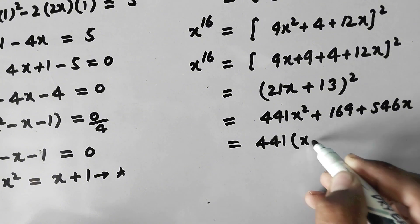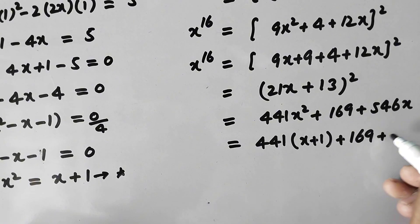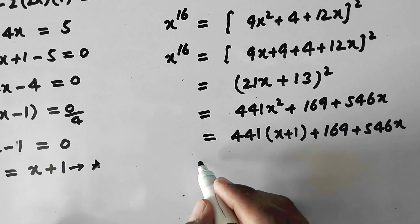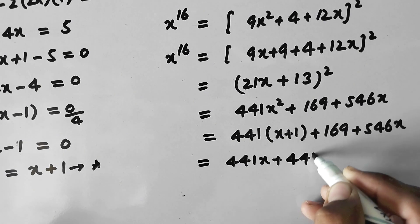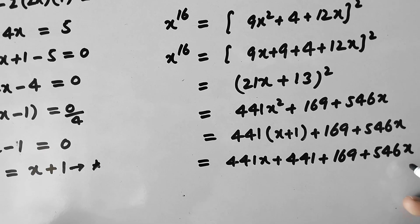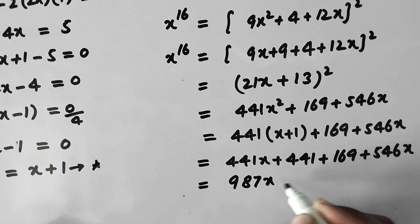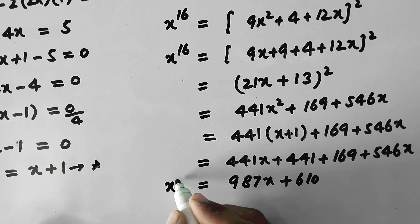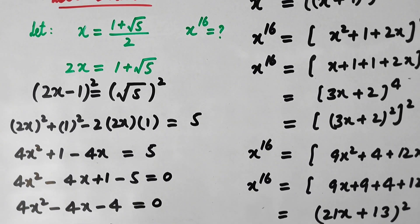Now squaring (21x plus 13): we get 441x squared plus 169 plus 546x. Substituting x squared equals x plus 1 again: 441(x plus 1) plus 169 plus 546x, which gives 441x plus 441 plus 169 plus 546x, equaling 987x plus 610. So x to the power 16 equals 987x plus 610.